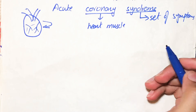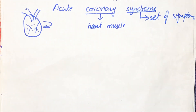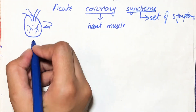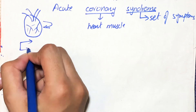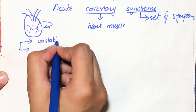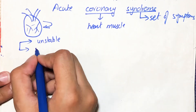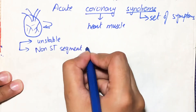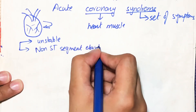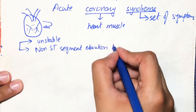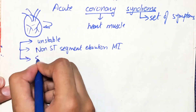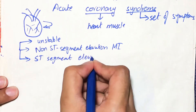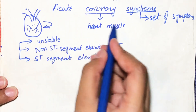There are three types or three forms of acute coronary syndrome: unstable angina, which we have discussed in a previous video; non-ST segment elevation myocardial infarction; and ST segment elevation myocardial infarction. So these are the three forms of acute coronary syndrome.